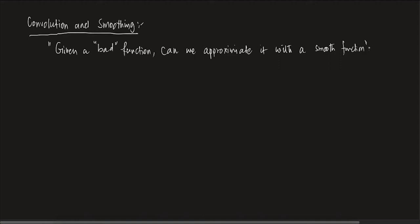We already know that smooth functions are nice functions. So the question is: bad functions may not work all the time, but you cannot throw them out either. So once you are given a bad function, how do you deal with it? Essentially, what we do is take a smooth function, work out our properties, and then approximate the bad function with the help of smooth functions and see if things work.